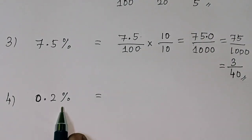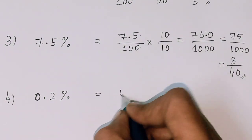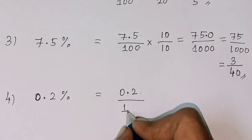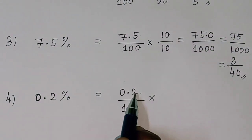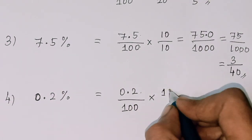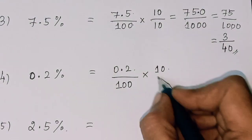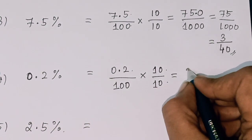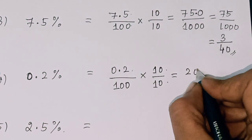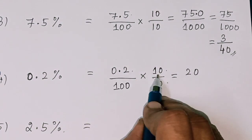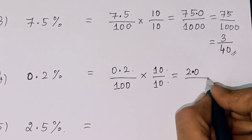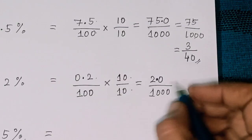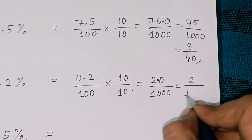0.2 percent: 0.2 divided by 100. Multiply both numerator and denominator by 10: 0.2 into 10 equals 2, and 100 into 10 equals 1000. So 2 divided by 1000.